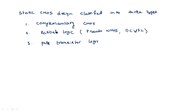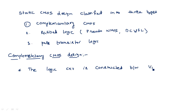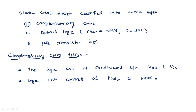In this video I am going to explain complementary CMOS logic circuit design. Complementary CMOS circuit design means whatever circuit diagrams we have seen so far — all of these are complementary circuit designs. In this, the logic circuit is constructed between VDD and VSS.